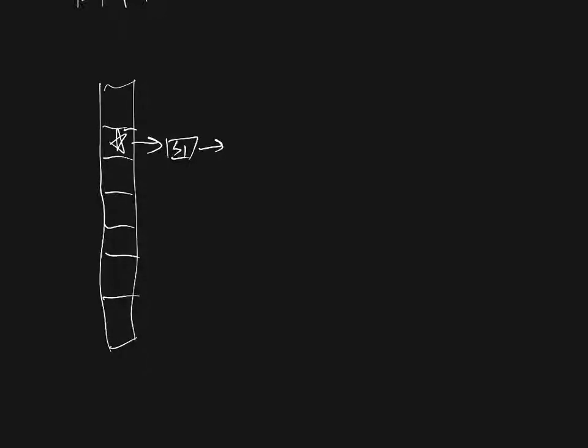So if you have string 1 mapped to the same slot, string 2 mapped to the same slot, string 3 mapped to the same slot, you just put a linked list there. So every time you look for it, you get to that slot, and you look for your element in a linked list. Easy enough.